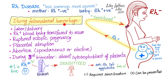What are other causes of fetal-maternal hemorrhage, meaning the placenta is broken and mommy's blood and baby's blood are mixed? Labor and delivery is the most common. Also, RH positive blood being transfused to mommy is a huge mistake — if mommy is RH negative, we shouldn't give her RH positive blood, lest sensitization occur. Other causes include ruptured ectopic pregnancy, placental abruption, termination (spontaneous or elective), and during the third trimester, a rare condition called absent cytotrophoblast of the placenta.